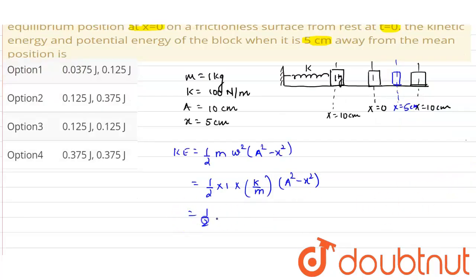Now half into 1 into k is given to us as 100 N per meter, mass is 1, into amplitude is given to us as 0.10 whole square minus 0.05 whole square. So on solving this, we will get kinetic energy as 0.0375 joules.